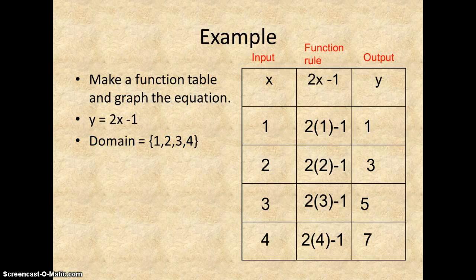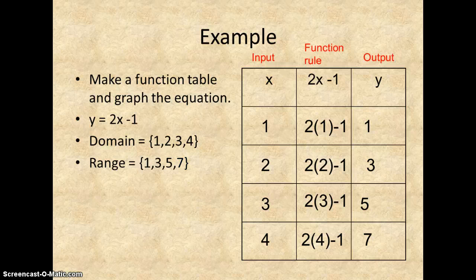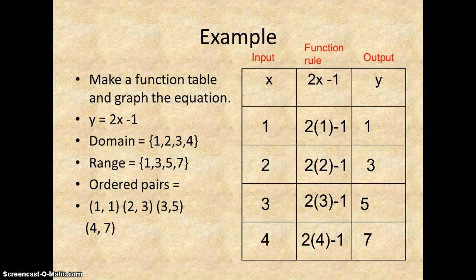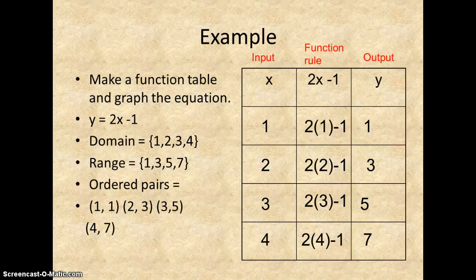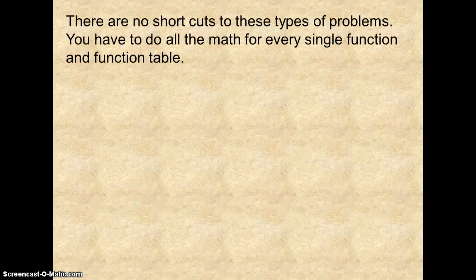So again, our domain is 1, 2, 3, 4. Our range is 1, 3, 5, and 7. The ordered pairs are, once you put them together, again comma to separate and parentheses to group them.